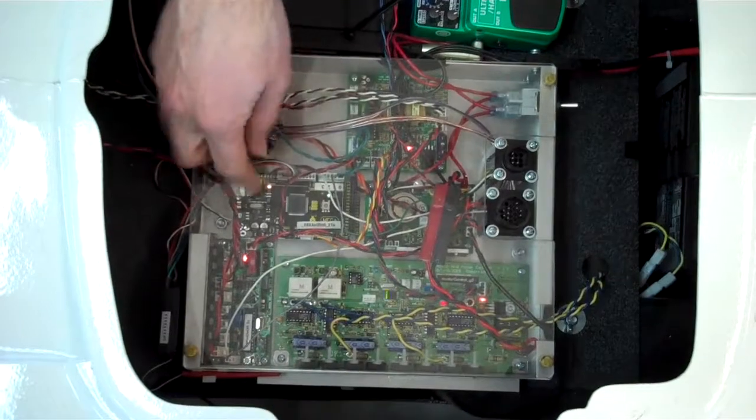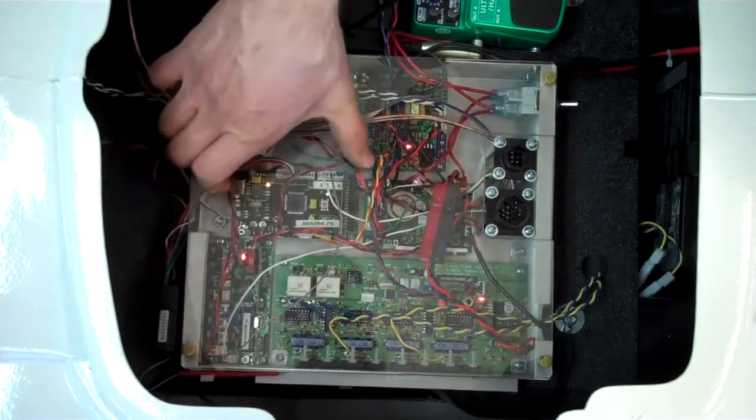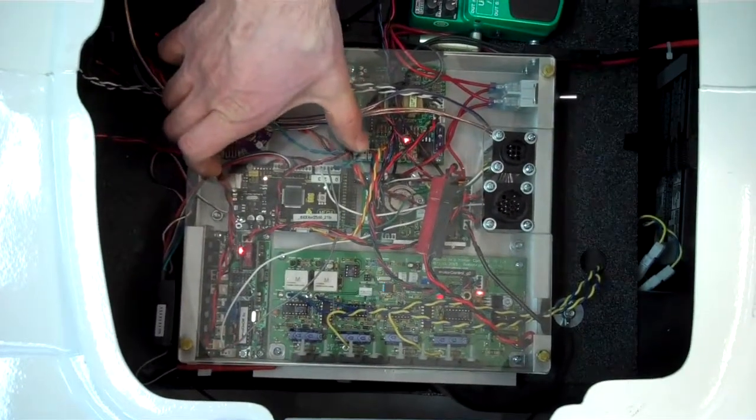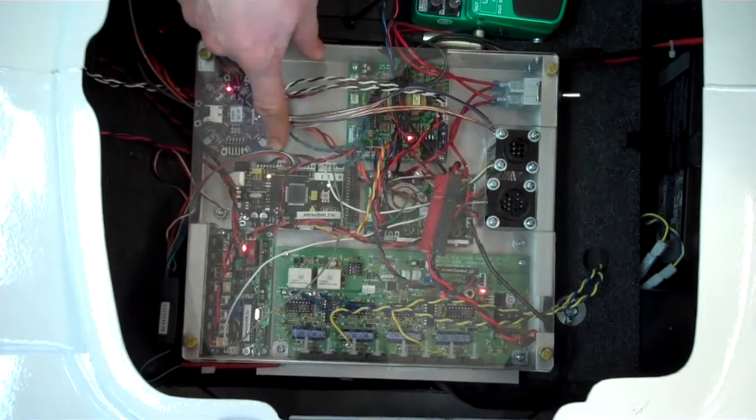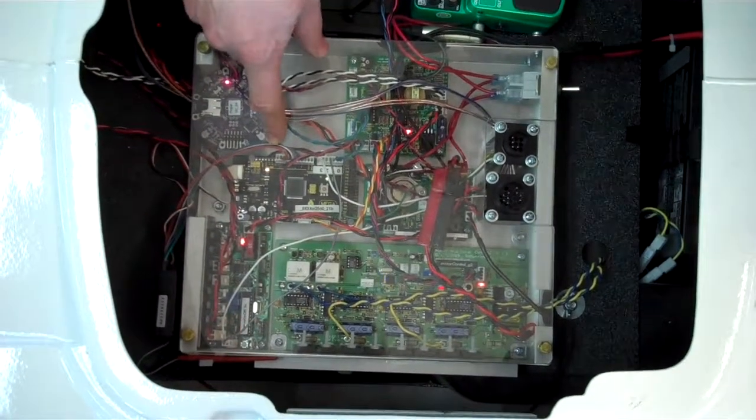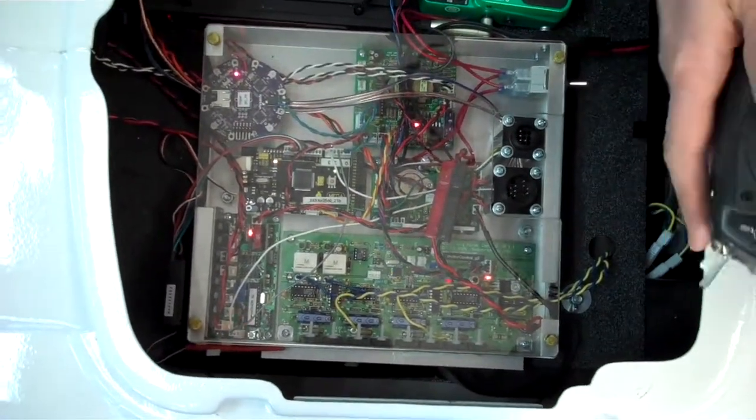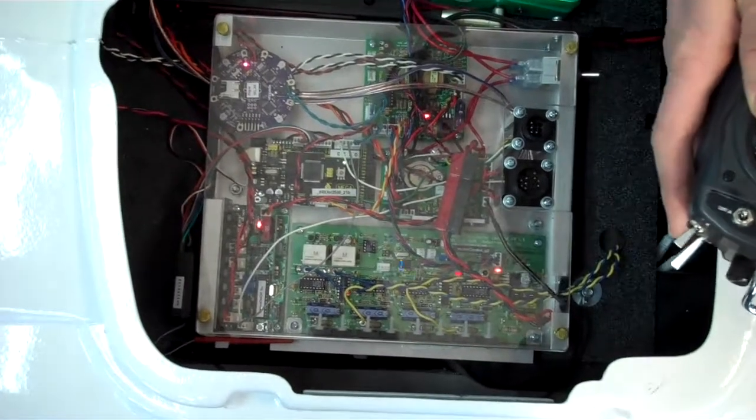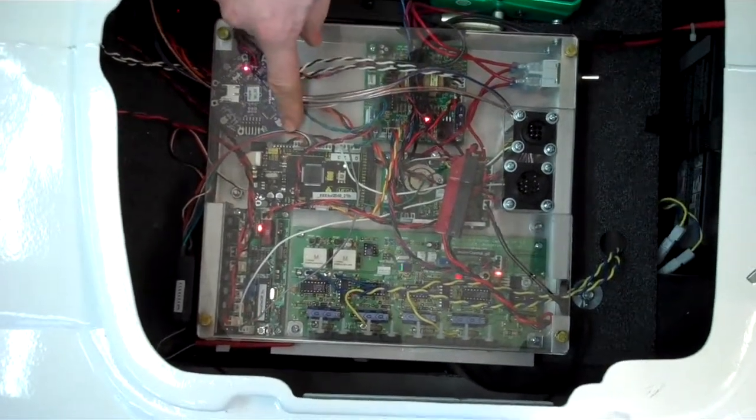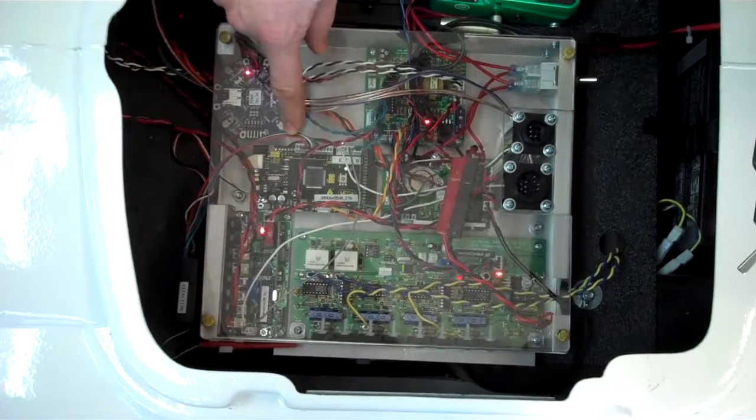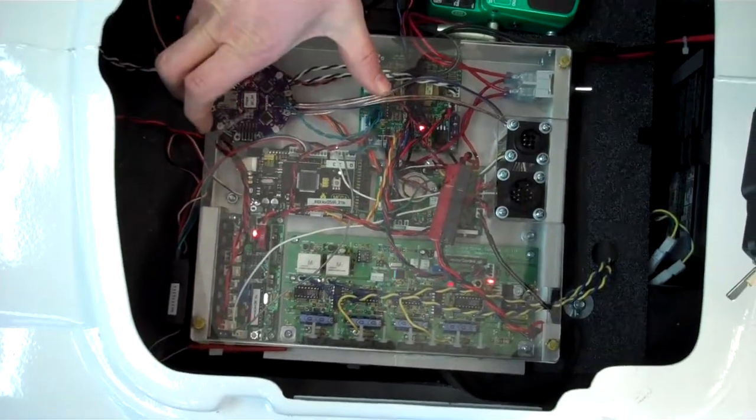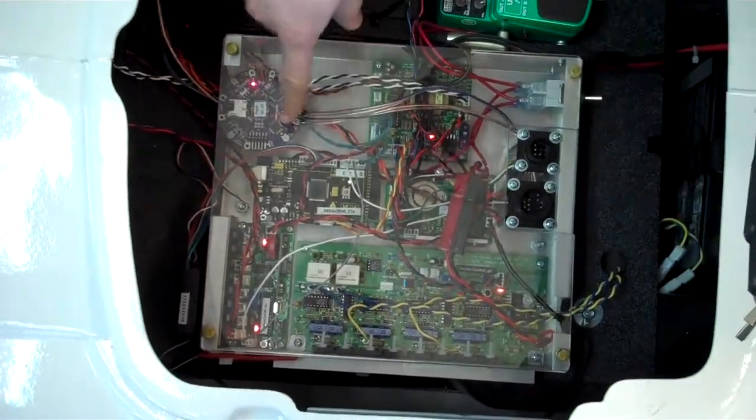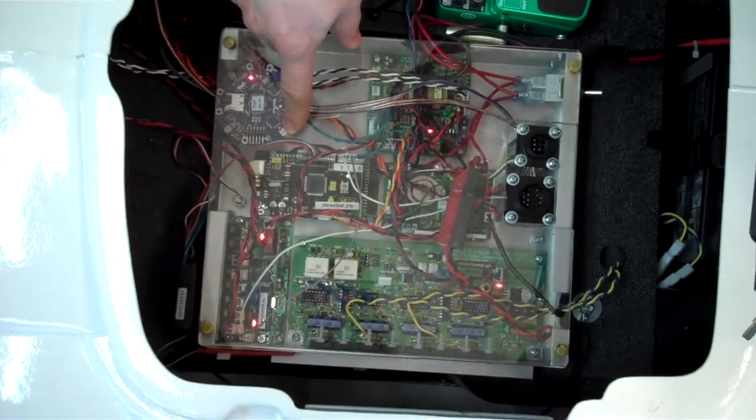And our next component that's worth noting is this is the main processor board. It's the mega board. There's a blinking LED on there. And when we turn on the RC, that LED will blink faster when it is receiving a good signal. And when I turn it off, then that LED will blink slower.